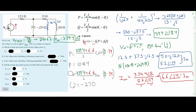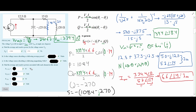Since our current and voltage are in opposite directions, we factor in the negative sign. So S_G = -(P + jQ) = -1084 - j(-270) = -1084 + j270, measured in VAs. For Part B: since P = -1084 is negative, the voltage source is delivering power. For Part C: since the imaginary part +270 is positive, the voltage source is absorbing magnetizing VARs.